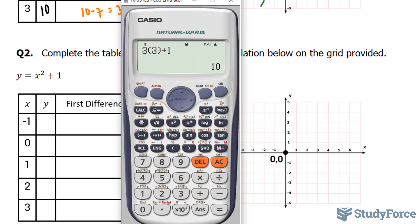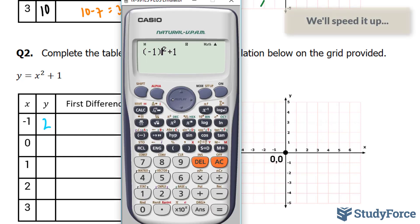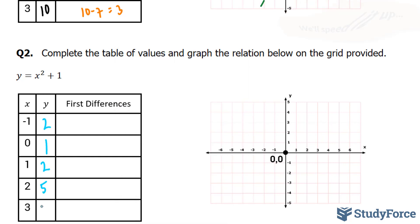We'll start off with negative 1. So we have negative 1 to the power of 2 plus 1. That gives us 2. And I'll do the same thing for all the other numbers. And we end up with 10.